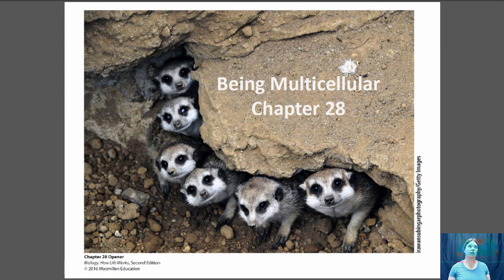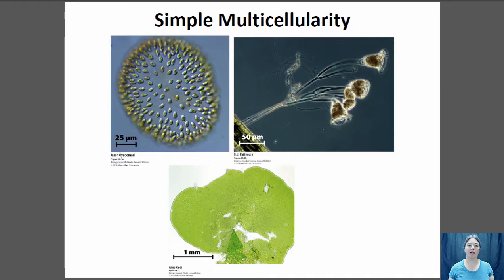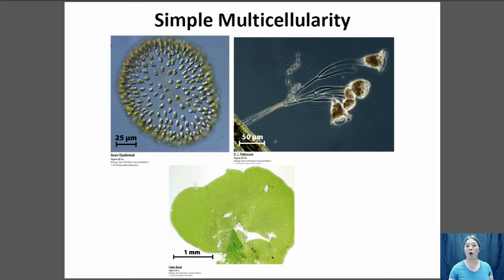Most living organisms that you generally see and interact with on a regular basis are multicellular organisms, and that's actually a relatively recent evolutionary development in life on this planet. The first multicellular organisms were probably quite simple — clusters or colonies of individuals that had very little cell differentiation.